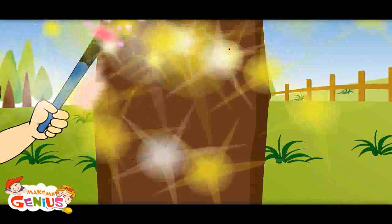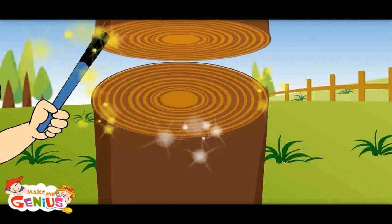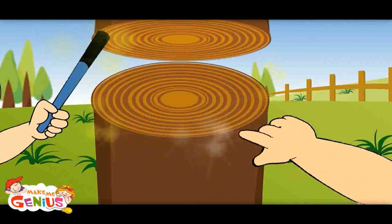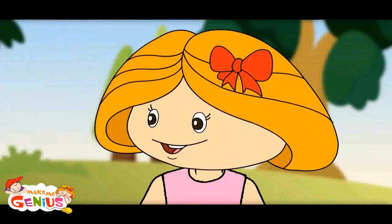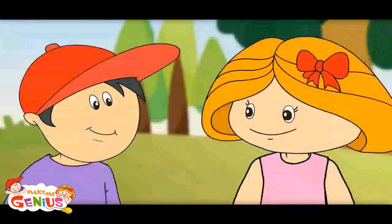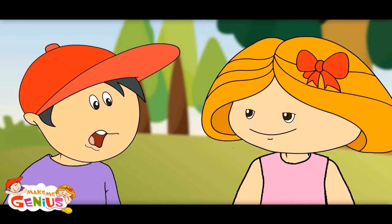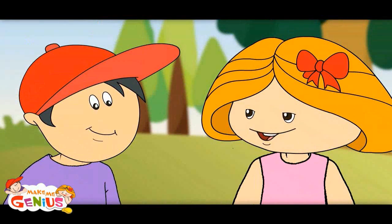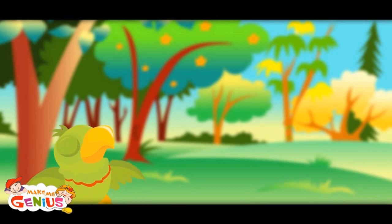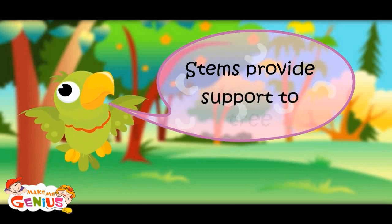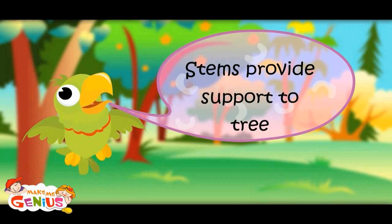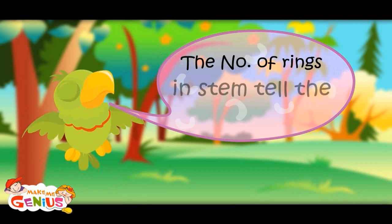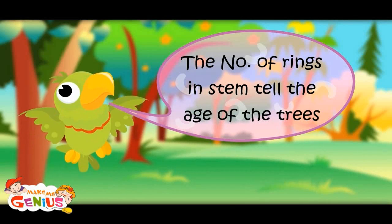Look, here's a cut tree. There are rings in the stem. Can you count these rings? There are so many, I can't count them. You know, if you can count these rings, you can know the age of the tree. Stem provides support to the tree, and the number of rings in the stem tells the age of the tree.